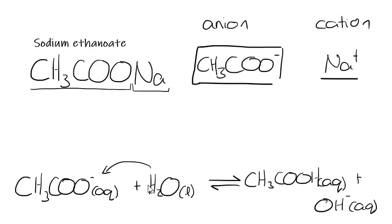So this is a base because, first of all, it's accepted a proton from water, and then it's increased the concentration of hydroxide ions in the solution. So this is just the equation that we had for CH3COOH, but pretty much just the opposite way around. Ethanoate can act as a base.